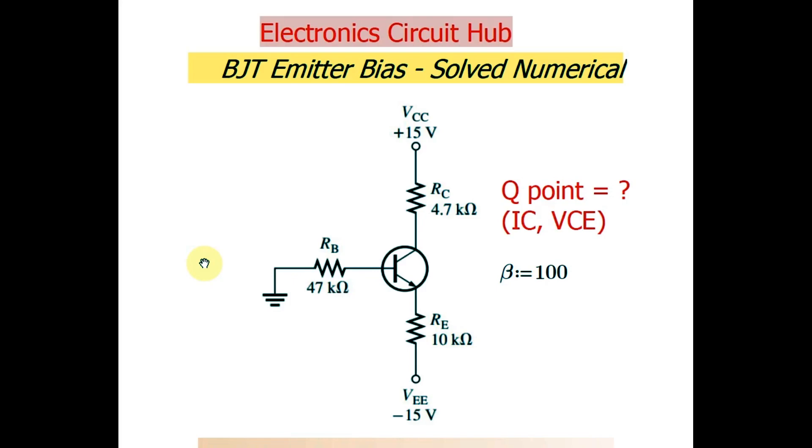We will find out the Q point or operating point if BJT is biased in emitter bias configuration. We will find out the value of collector current IC and the VCE when your BJT is biased in emitter bias configuration.